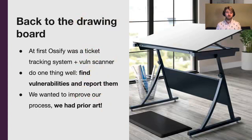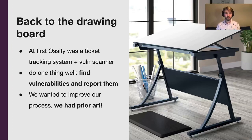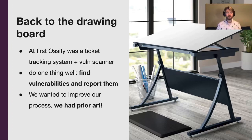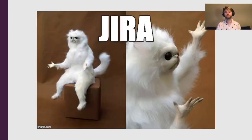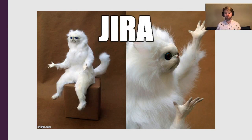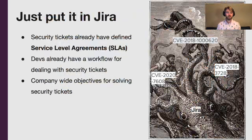So we had to admit that Ossify was an effective tool, but it was not only reporting vulnerabilities — it was also acting as an internal ticketing system. For something we wanted to maintain long term, we wanted Ossify to do one thing well: find vulnerabilities and report them. We had some prior art to work from to figure out the best way to do that at Slack. And that answer was Jira. We have a Jira system with security tickets that can be acted upon by developers. So our solution was to put it in Jira.